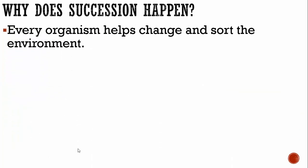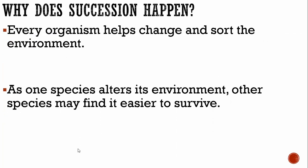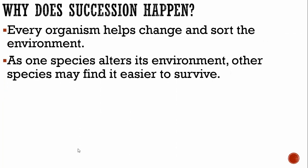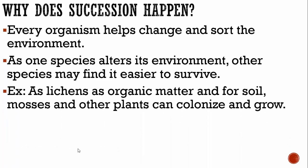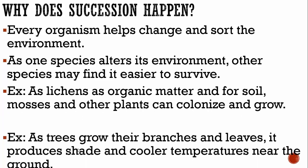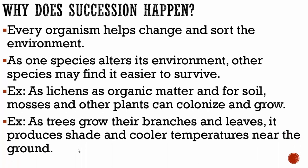So why does succession even happen? Every organism helps change and alter the environment. As one species alters its environment, other species may find it easier to survive. For example, as lichens add organic matter and form soil, mosses and other plants can colonize and grow. As trees grow, their branches and leaves produce shade and cooler temperatures near the ground for organisms that may live there.